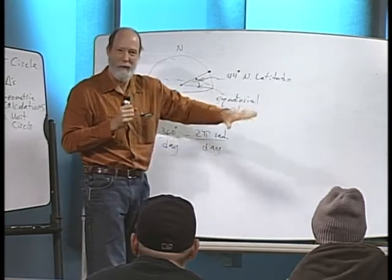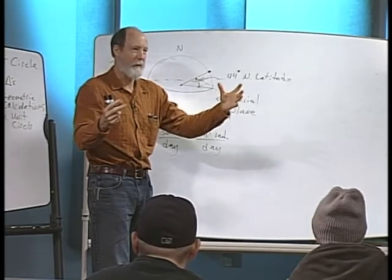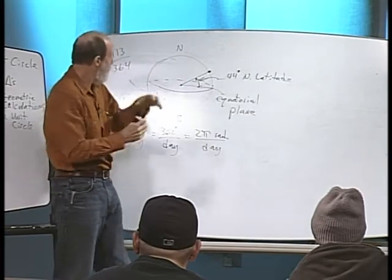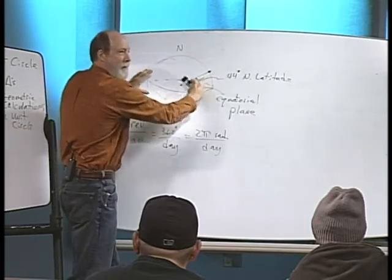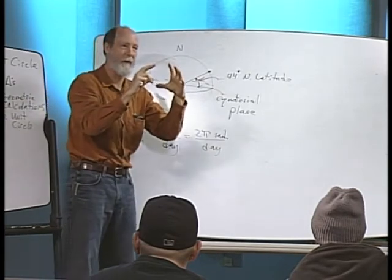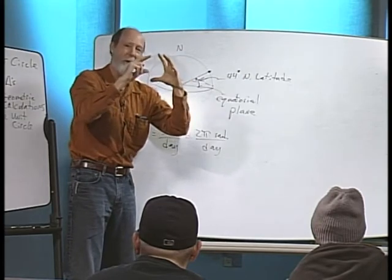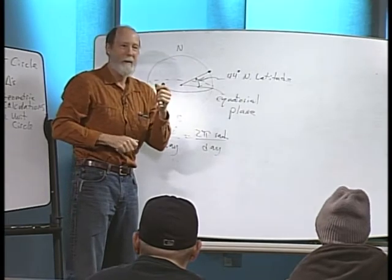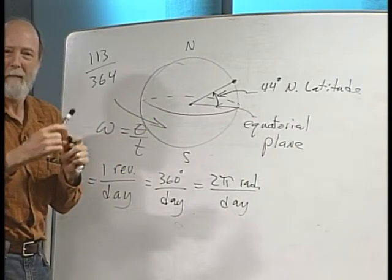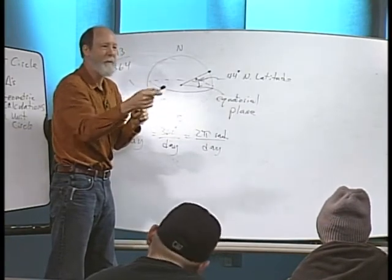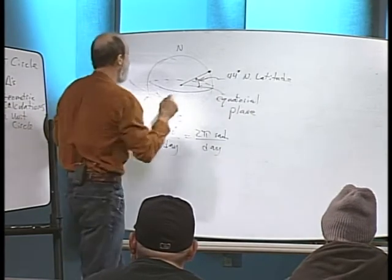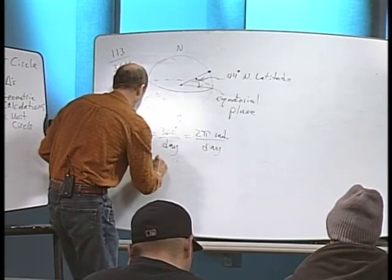Imagine the earth with all its mass doing a complete revolution in 24 hours - there's quite a bit of force generated. So the earth is actually a little fatter across the equator than the distance from north to south pole. It's called an oblate spheroid - not a perfect sphere, it's squashed a little and squeezed out at the equator. The approximate radius from the textbook is around 3960 miles.